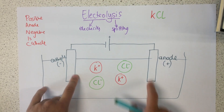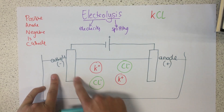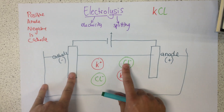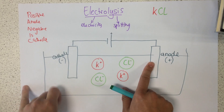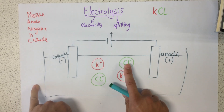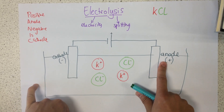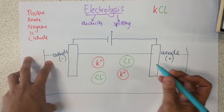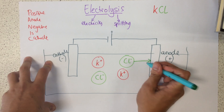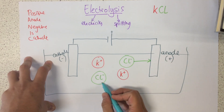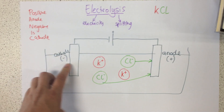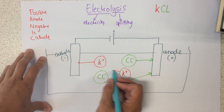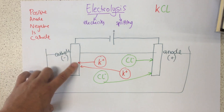As soon as we start passing an electric current through, our ions will move to one or the other electrode. The golden rule is opposites attract. So this negative chloride ion is going to be attracted to the positive anode, and our positive potassium ions are going to be attracted to the negative cathode.